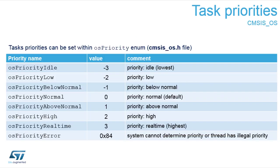There exist some system-defined priorities. You can see them starting with the idle priority with a value of minus three. Then we have low, below normal, and normal priorities up to zero. We can also increase the priorities up to real-time with a value of three. Of course you can define your own set of priorities. There is also a special value: always priority error.